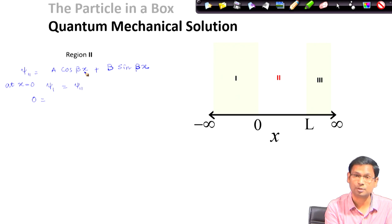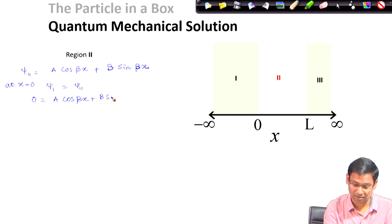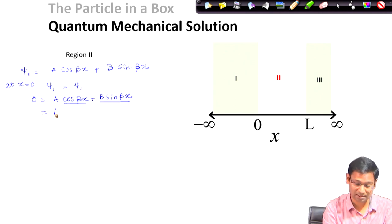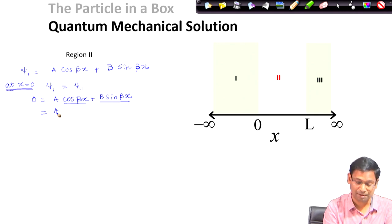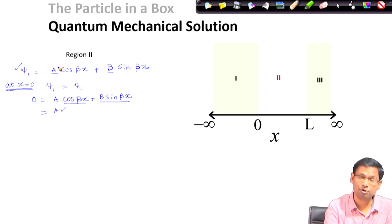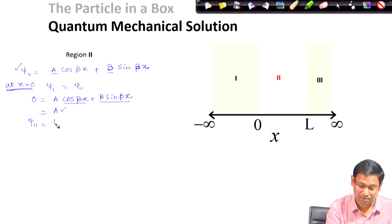We know psi1 equals 0 throughout. At x = 0, sine is 0 and cosine is 1, so psi2 at x = 0 reduces to A. For continuity, A must equal 0. Therefore the cosine term vanishes, and the wave function in region 2 simplifies to B sin(beta x).